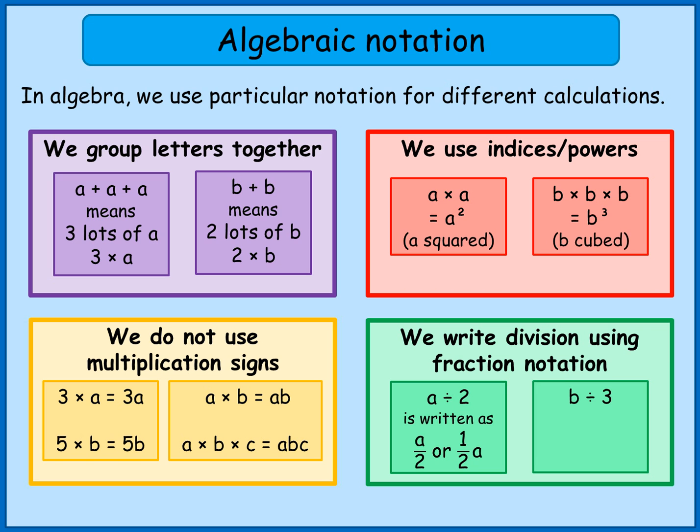In the same sort of idea, b divided by 3 would be written as b over 3 using the fraction notation, or a third of b. And again, b divided by 3 or b over 3 is the same as a third b.